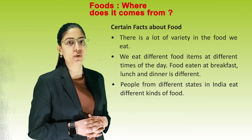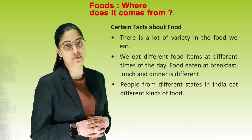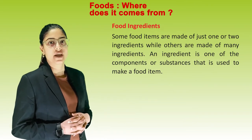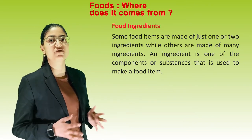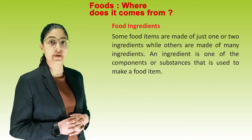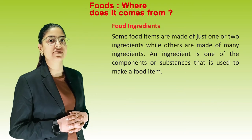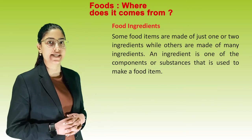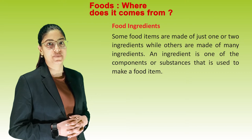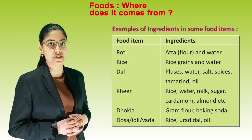Food ingredients. Some food items are made up of just one or two ingredients, while others are made up of many ingredients. An ingredient is one of the components or substances that is used to make a food item. Here are some examples of ingredients in various food items.